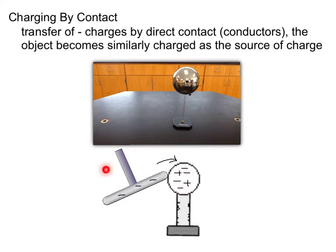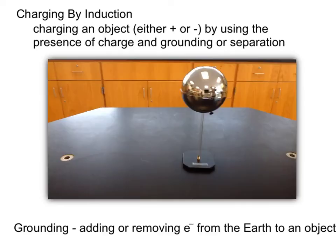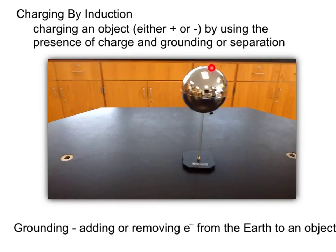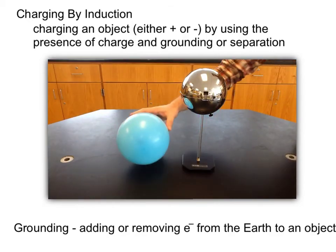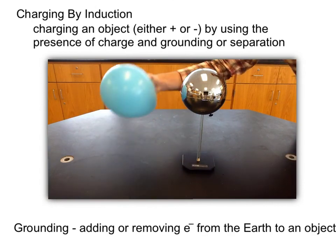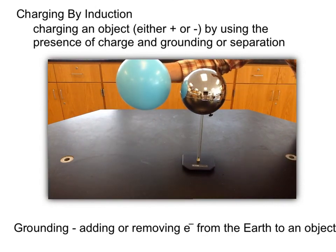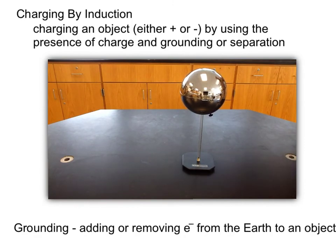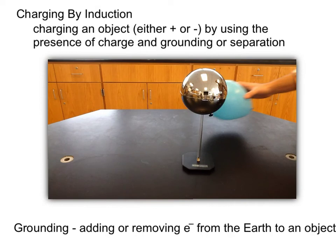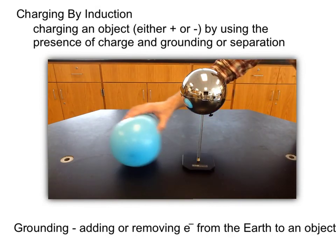You should note that charge is conserved: the plate lost negative charges, but they were simply put onto the metal sphere, so the total number of charges is still the same after the charging process as before. Our last method of charging is charging by induction. This is where we charge an object either positively or negatively by using the presence of charge and grounding or separation. Let's take a look at this example where I bring a negatively charged balloon near a neutral metal sphere, and then touch the sphere to ground.